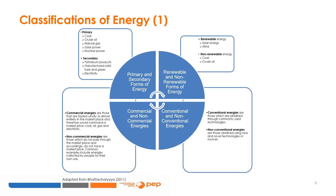As energy can be obtained from various sources, it is customary to classify them under different categories. Primary and secondary forms of energy: primary energy is used to designate an energy source that is extracted from a stock of natural resources or captured from a flow of resources and has not undergone any transformation or conversion other than separation and cleaning. Examples include coal, crude oil, natural gas, solar power, nuclear power, etc. Secondary energy, on the other hand, refers to any energy obtained from a primary energy source employing a transformation or conversion process. Thus, oil products or electricity are secondary energies as these require refining or electric generators to produce them.